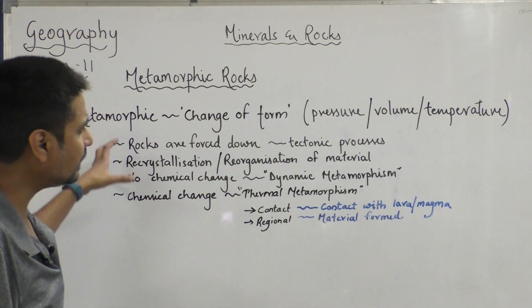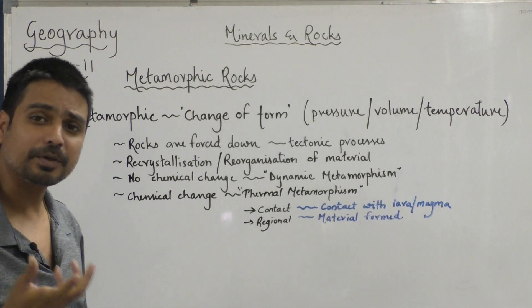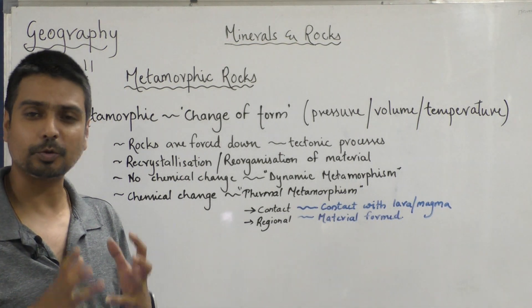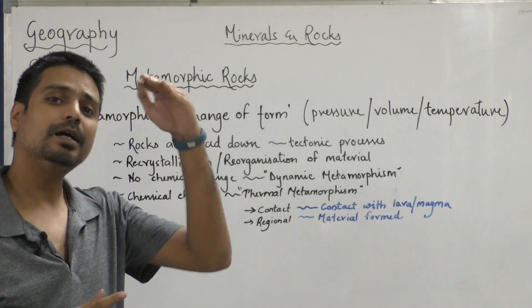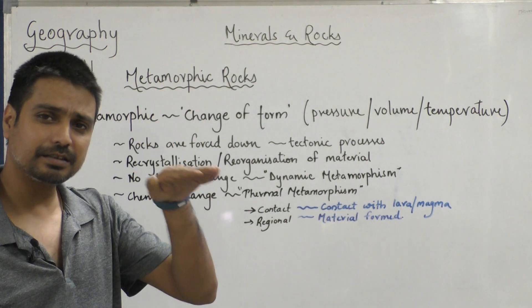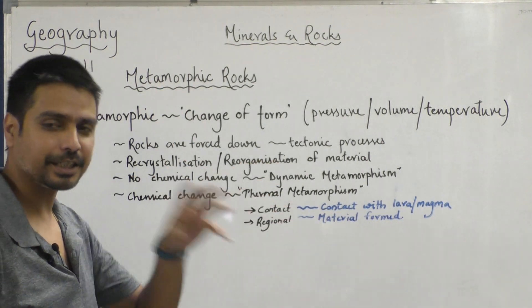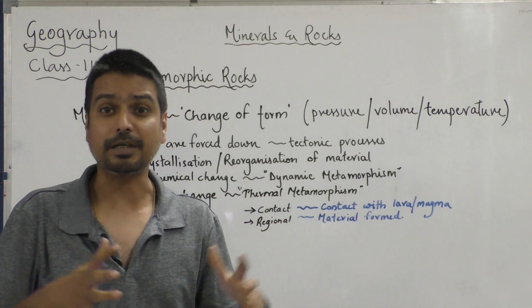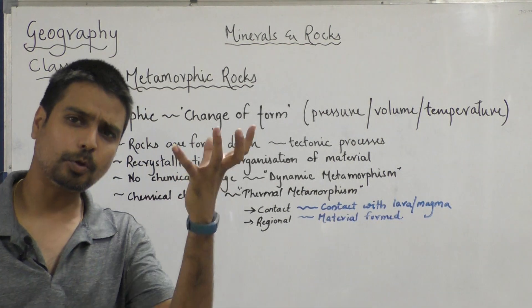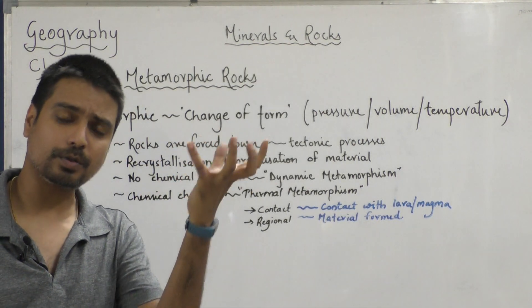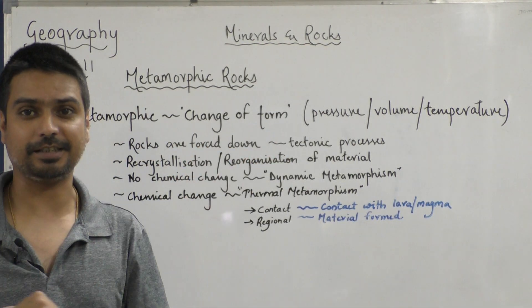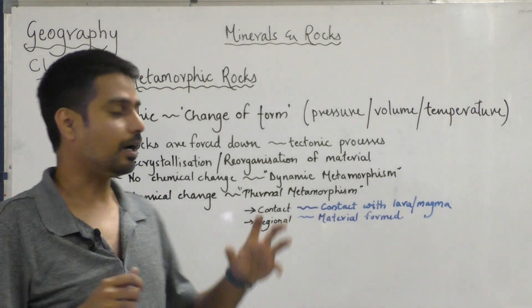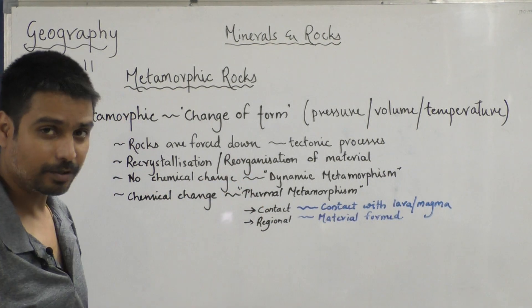Aksar yeh dekha jata hai ki jab tectonic processes hote hain, tab rocks jo hote hain, woh suddenly earth ki crust or mantle level se neeche ki taraf chale jate hain. Jab lava magma upar aata hai, to earth ki jo heavier rocks hain, woh neeche chale jate hain. And thus are formed metamorphic rocks.